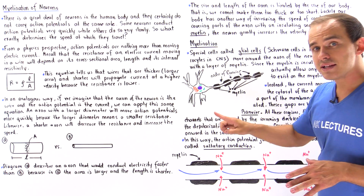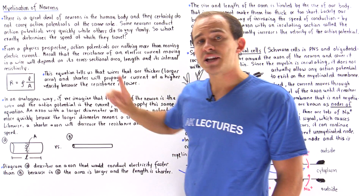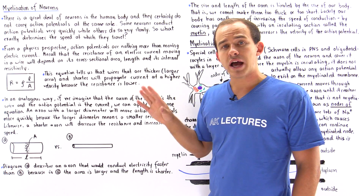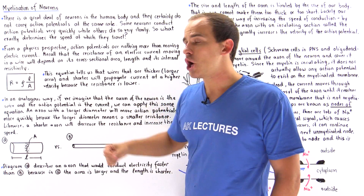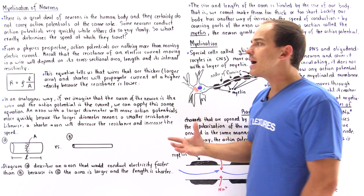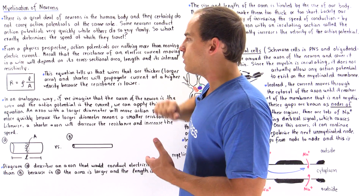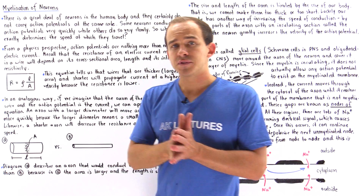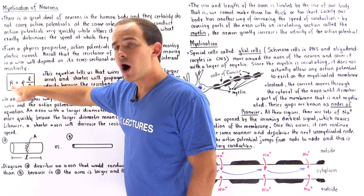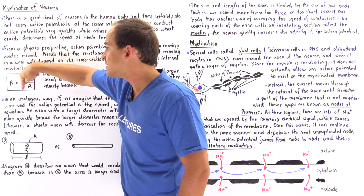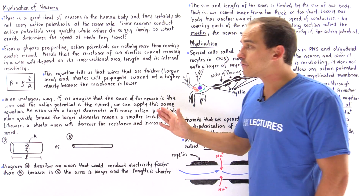Resistance itself depends on three important factors. The resistance of an electric current moving inside a wire depends on the cross-sectional area of that wire — its thickness — the length of that wire, and an internal property known as resistivity, which depends on the type of material the wire is made of. This equation summarizes what we just said: resistance equals resistivity rho multiplied by L, the length, divided by A, its cross-sectional area.